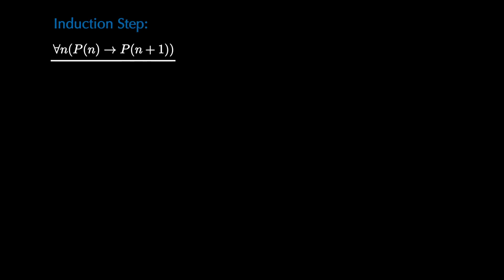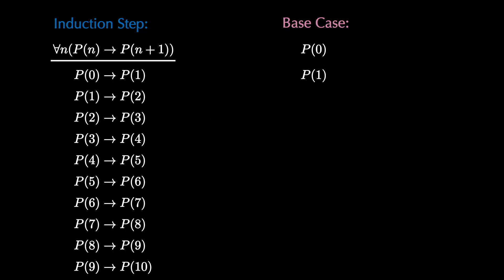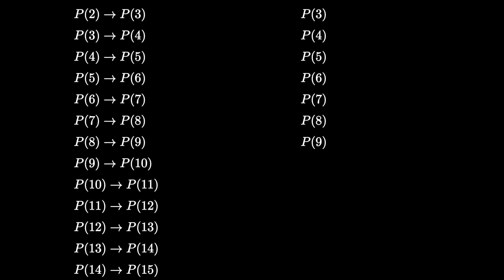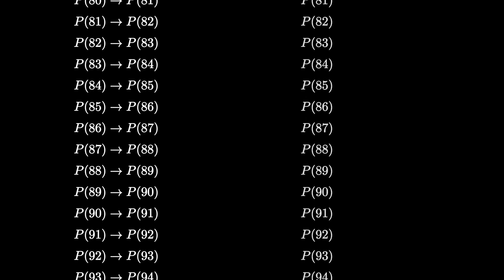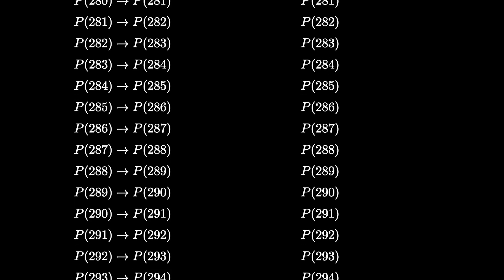The induction step is a universal conditional statement, which means it represents infinitely many conditional statements. None of these conditional statements mean anything until we satisfy one of the hypotheses, but the base case does just that. The base case satisfies the first hypothesis, and when we couple that with the first conditional statement, we get p1 by modus ponens. Now that we know p1, we couple it with the second conditional to get p2 by modus ponens. This process can be continued indefinitely — we can use the newly created proposition with the next conditional to find the next proposition, creating a cascading waterfall of modus ponens. For instance, if we want to know whether p of 100 is true, we just run this process until we reach p of 100, and we can keep going all the way to p of 500 or larger.